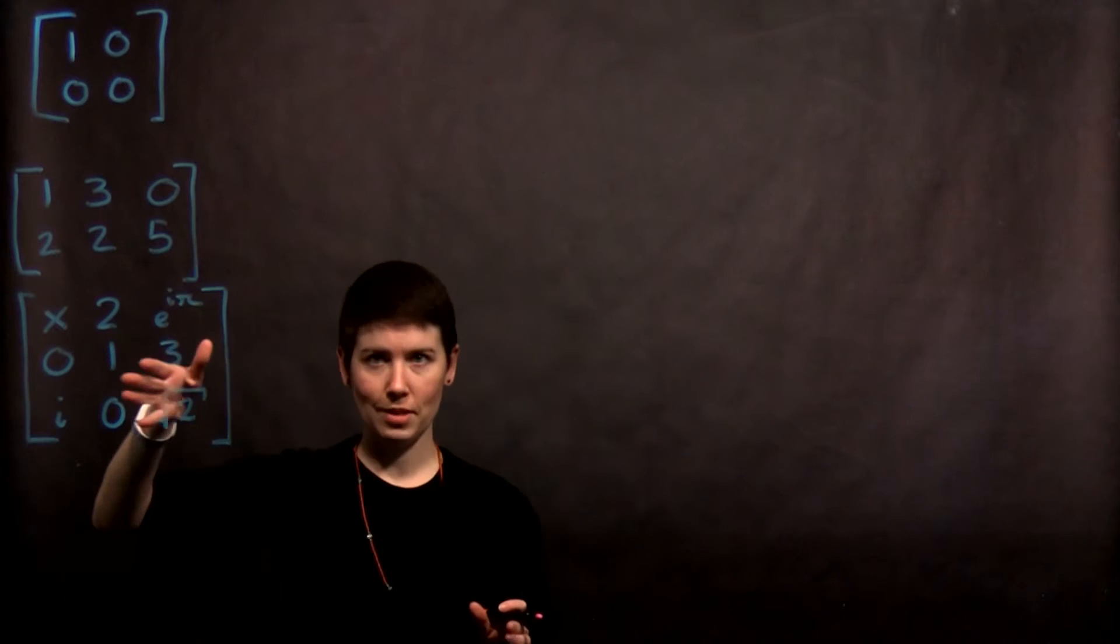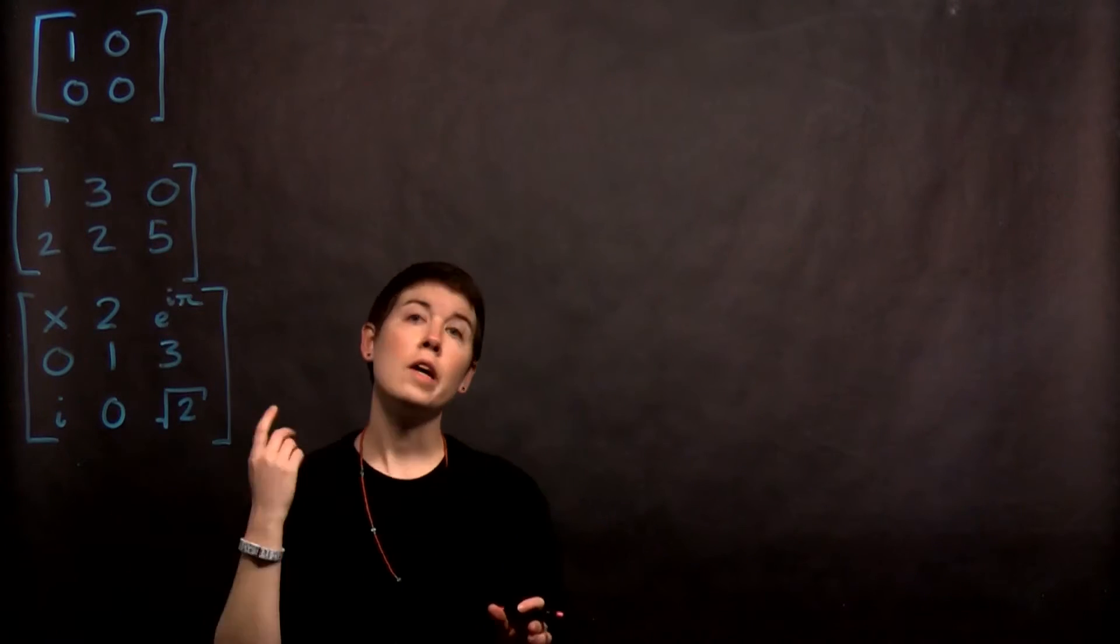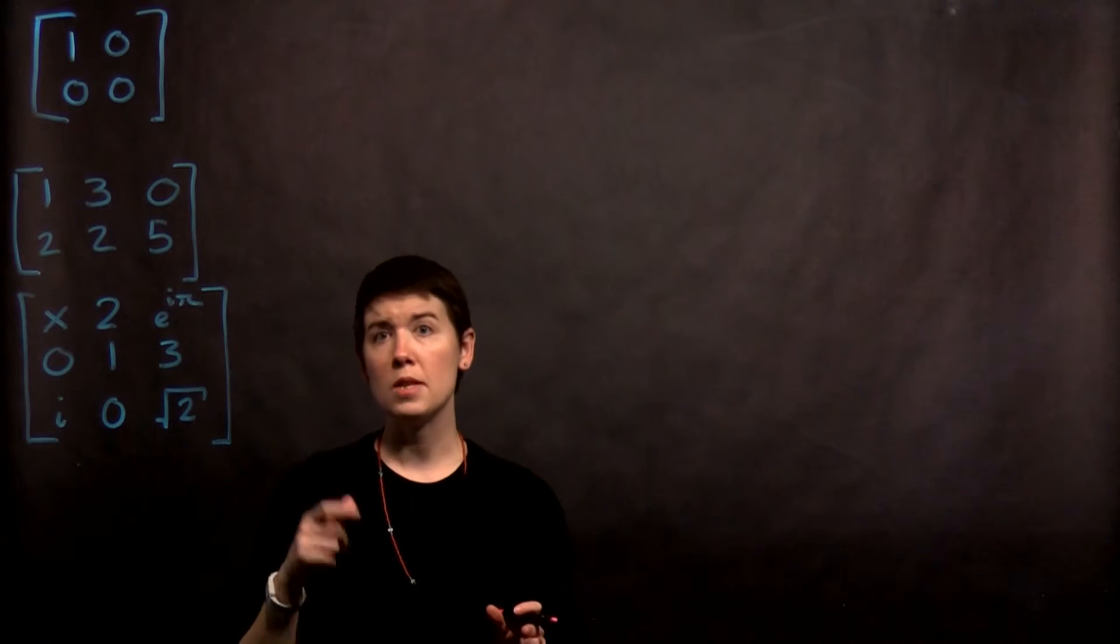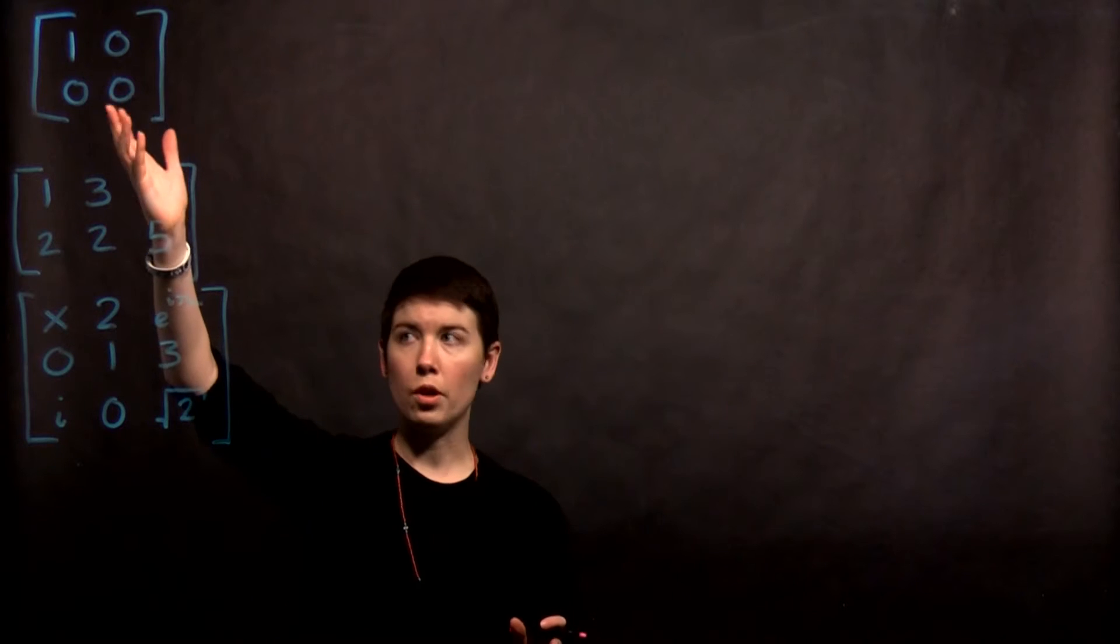So, these are matrices. We have multiple entries arranged in some pattern. Now for quantum mechanics, we're normally going to be interested in square matrices, where the number of columns equals the number of rows.